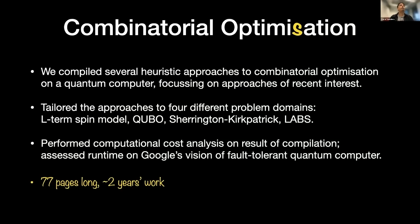We looked at various heuristic approaches for four different problem domains. From left to right, this is more general to more specific: the L-term spin model is a very generic optimization problem; quadratic unconstrained binary optimization (QUBO) is the sort of thing D-Wave believes they can do better at; Sherrington-Kirkpatrick is a spin glass model; and LABS — Low Autocorrelation Binary Sequence — is a particular instance of L-term spin where for each number of bits to be optimized, there is exactly one instance. These are problem domains of particular interest in recent quantum algorithms literature.